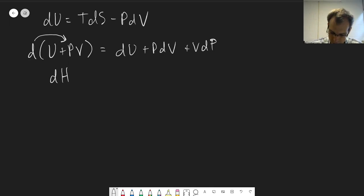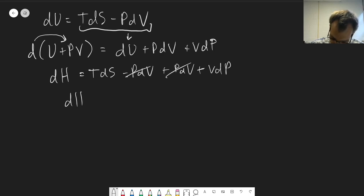But we can go ahead and substitute this expression for du here. So we get dh is equal to tds minus pdv plus pdv plus vdp. These two middle terms are going to cancel out, and so we can derive this expression here. dh equals tds plus vdp.